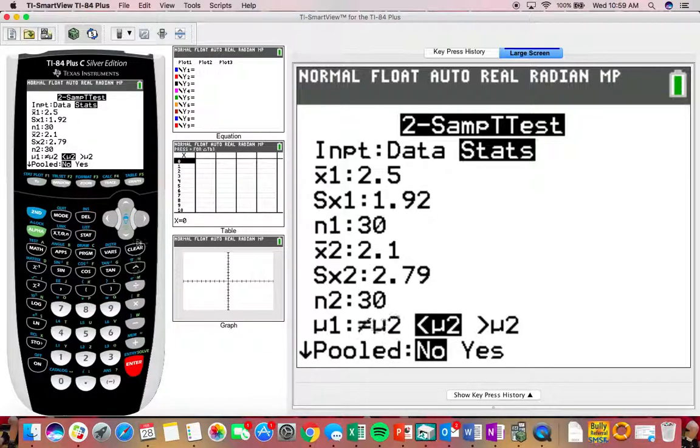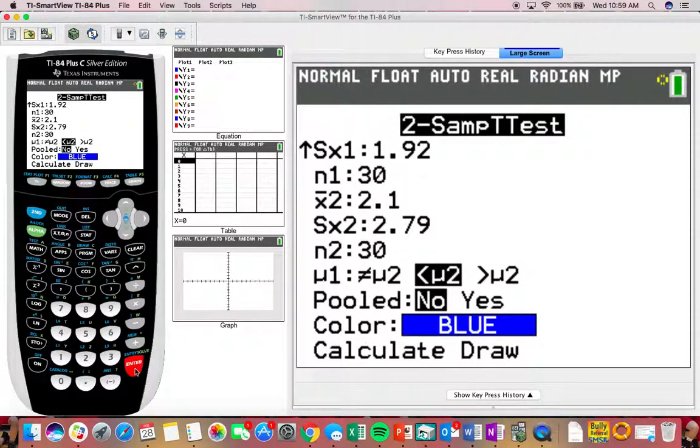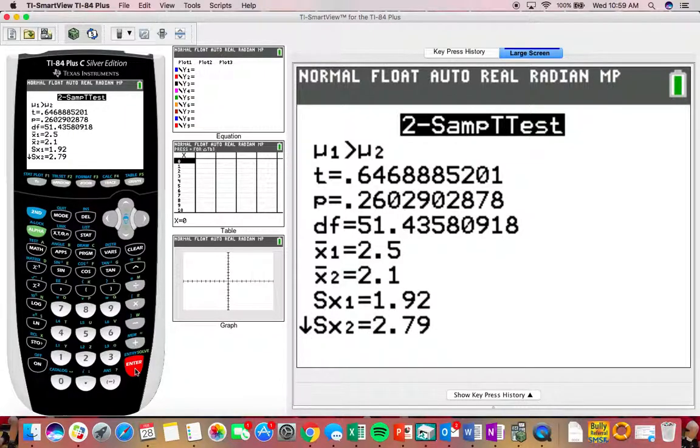And then for our alternative, we thought the mean for the first one was going to be bigger than the mean for the second one. Don't worry about pooled. Just leave that alone. And then go ahead and hit calculate. And so here is what I am getting. I'm getting a t-value of 0.646. For degrees of freedom, I'm getting 51.4. And for my p-value, I'm getting 0.26.